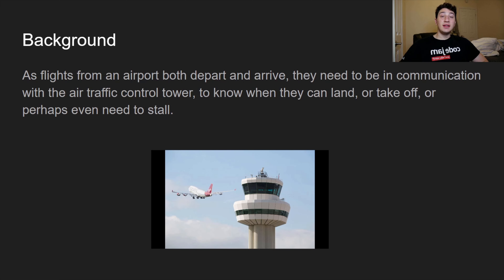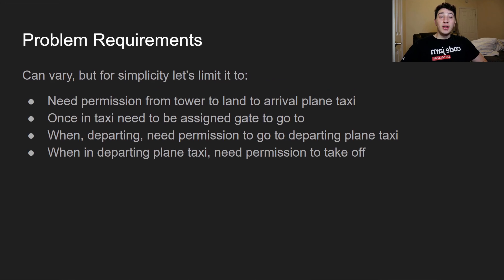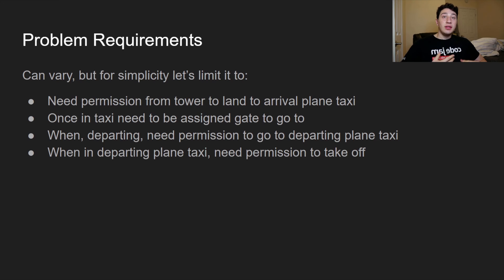Just to get some background: the entire point of an air traffic tower is to sit at the airport and tell planes when they're able to land from the airspace, go to the taxi, go to a specific gate, and when they're able to depart. The requirements are: a plane enters the airspace, needs permission to land, then permission to taxi, then gets assigned a gate — assuming there are vacant gates — and when ready to depart, needs permission to go to the departing taxi and then to depart. There's added complexity: taxis may be full, or there may be no gates left, causing planes to wait in the arrival taxi.